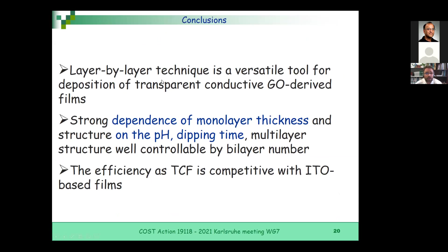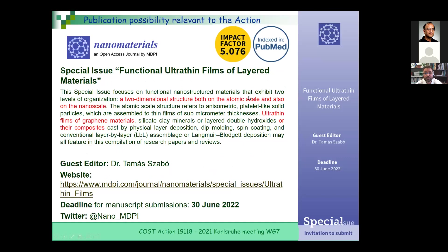Our main conclusion is that if you want to create carbon nanocomposites or graphene nanocomposites with polymer, our chemistry laboratory in Szeged is good for collaboration. Let us know if you are interested — not only in transparent conductivity but in any kind of application relevant to the COST action. This kind of publication is also interesting: if you work with ultrathin films of any kind of layered materials, there's a good opportunity to submit your paper in this open-access journal.